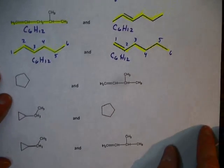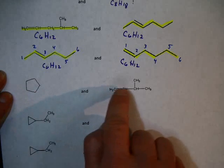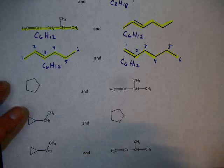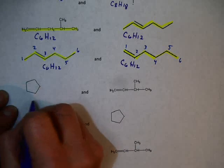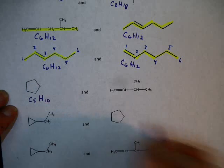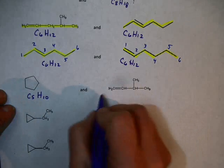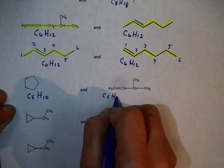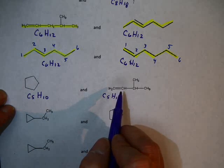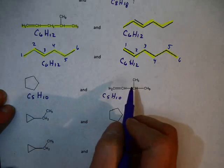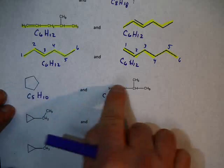Here's an example worth looking at. One compound is a cycloalkane and the other is an alkene, but they're actually constitutional isomers. The cycloalkane has 5 carbons, and because there's a ring, it's C5H10. The alkene also has 5 carbons giving C5H10. These definitely have a different order of bonding — one has a ring and one does not, one has a double bond and one does not. So these are constitutional isomers.